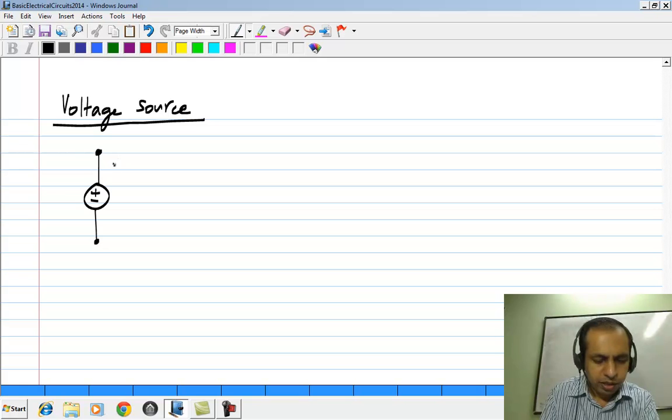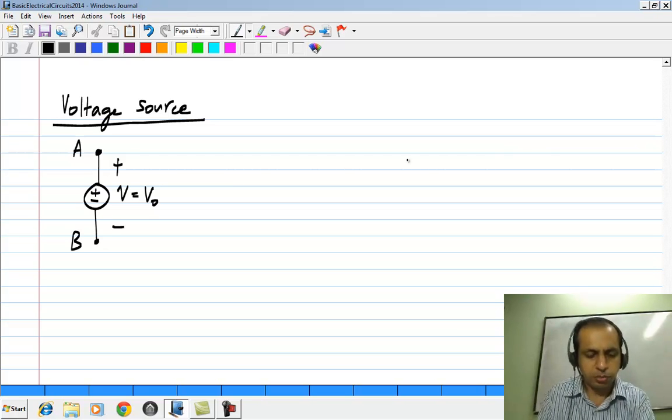It is given by this symbol with the polarity indicated inside. What does it mean? It means that the voltage between these two terminals A and B measured in this way, which is given by the polarity inside, is a certain V naught. This is the specified voltage. So, let us say for instance, let us take this to be 3 volts.